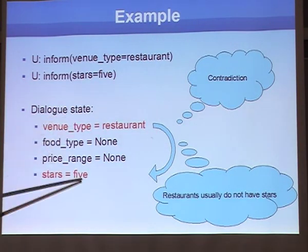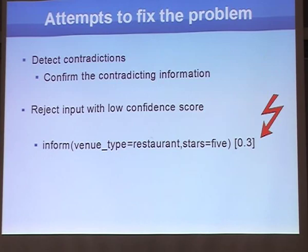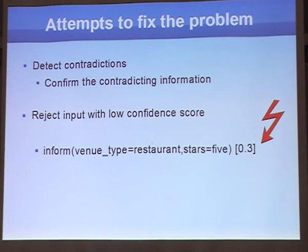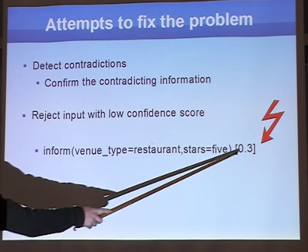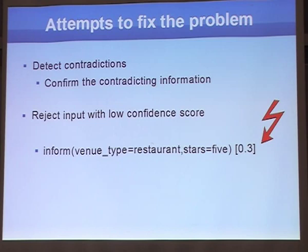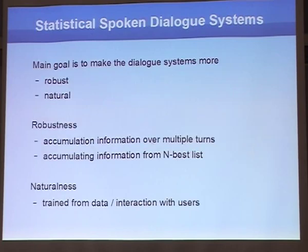Previous approaches propose several techniques to handle such errors: detecting contradictions and rejecting the information, or asking for confirmations. If the semantic interpretation has low confidence, we can reject it. But these are not ideal solutions. In statistical spoken dialogue systems, we try to build robust and natural systems. Robustness comes from accumulating information over multiple turns and from an N-best list, so even if the top hypothesis is wrong, lower hypotheses can help.